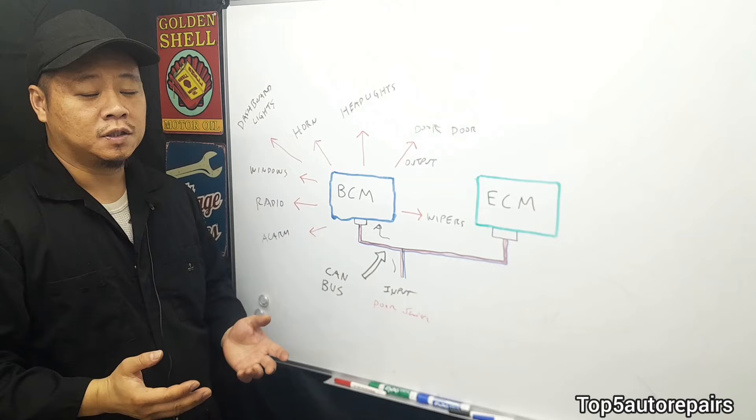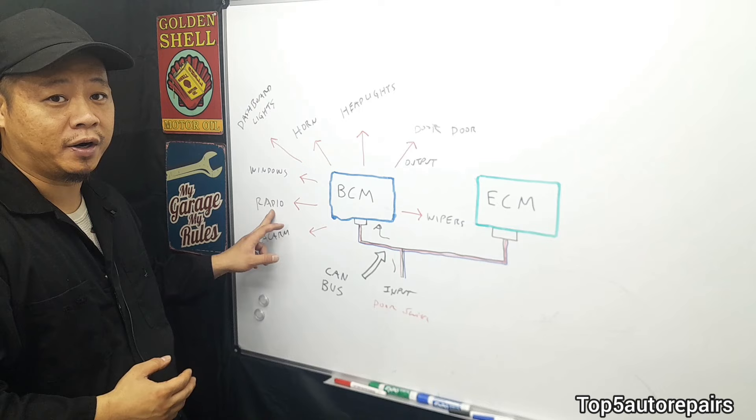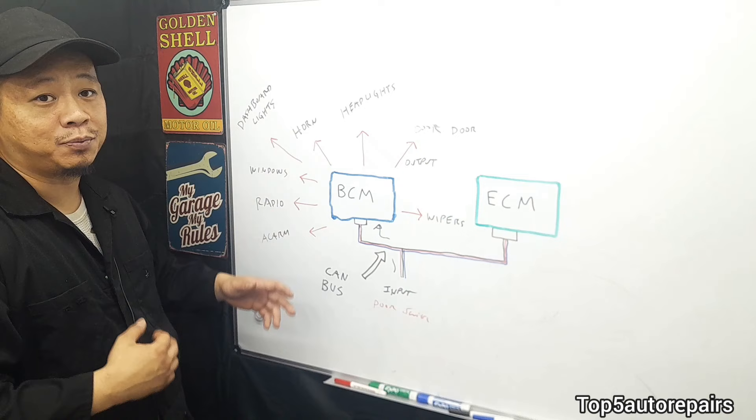So when you have a problem with the BCM, you may notice all sorts of issues. For example, you may notice the security system not working properly, you cannot control the radio volume, the window is not rolling up or down, the dashboard light flickering, or the horn is unresponsive.